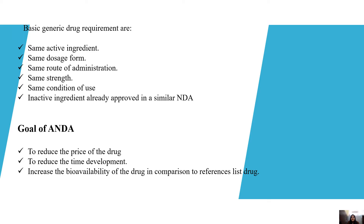What are the basic generic drug requirements? The basic generic drug requirements are: it must have the same active ingredient, same dosage form, same route of administration, same strength, same conditions of use, and inactive ingredients already approved in a similar manner in an NDA.